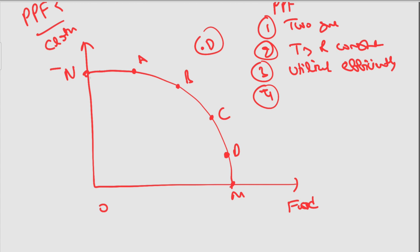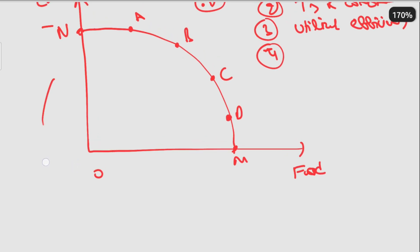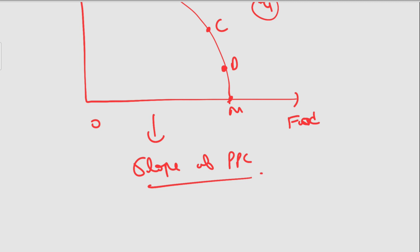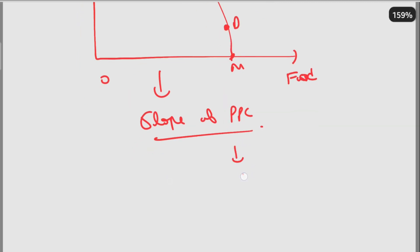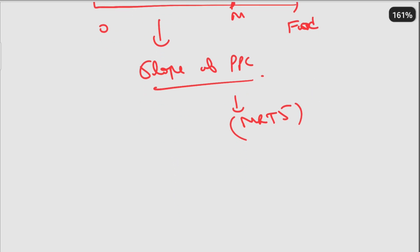What does that mean? It suggests that when a country moves from point A to point B to point C, it is substituting factors of cloth for the production of food — shifting factors from cloth to food production. We can understand this better by looking at the slope of the PPC curve.